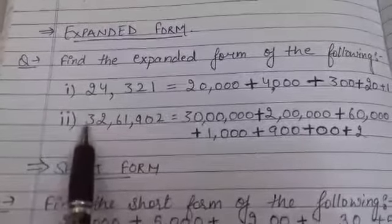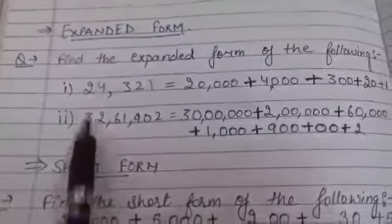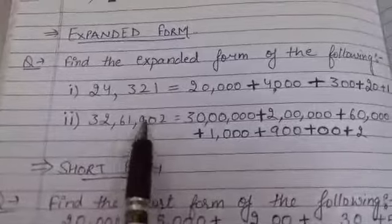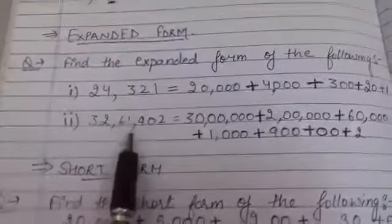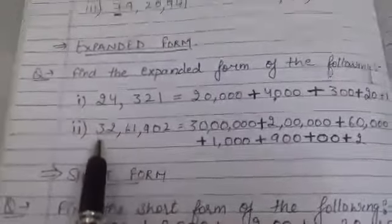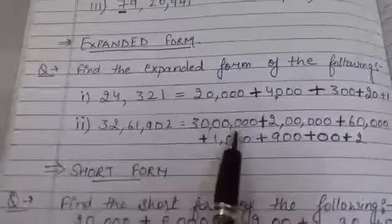It will be like taking the first number that is 3. It will be 1s, 10s, 100, 1000, 10,000, lakh, 10 lakh. It will be 30 lakh.